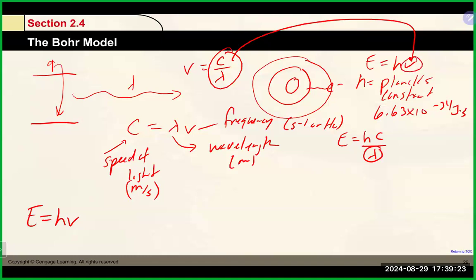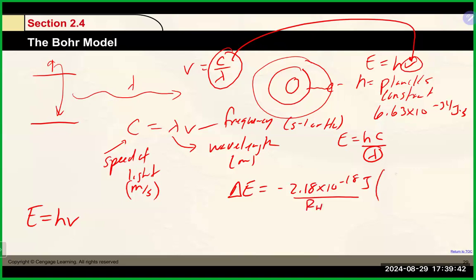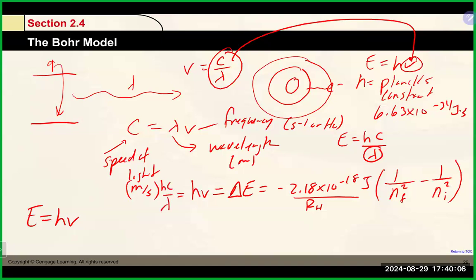So if you know the wavelength or the frequency, you'll be able to calculate the energy associated with that photon of light. We also talked about how as electrons transition we could calculate the change in energy: ΔE = −2.18 × 10⁻¹⁸ J × (1/n_final² − 1/n_initial²). That constant is sometimes referred to as the Rydberg constant, and n is the principal quantum number — the energy level. This energy can be set equal to hν or hc/λ, tying all those equations together.